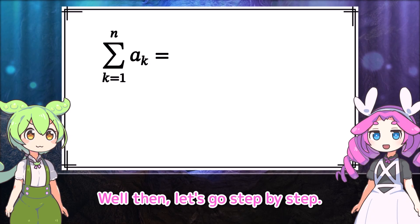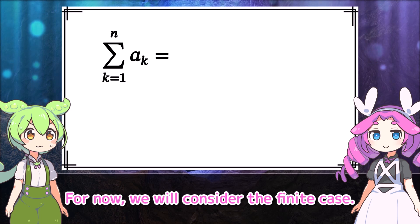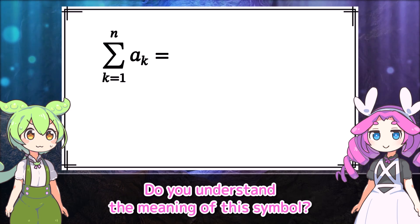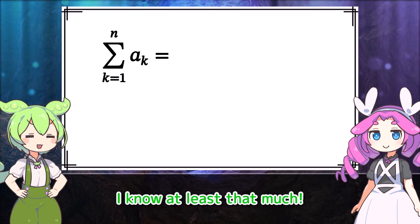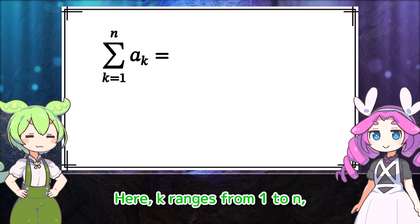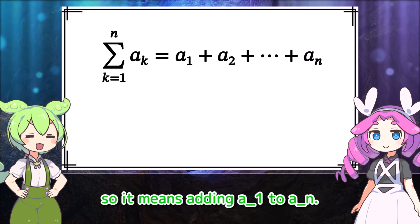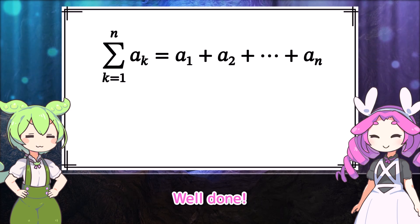Well then, let's go step by step. For now, we will consider the finite case. Do you understand the meaning of this symbol? Let's assume each a_k is a real number. k ranges from 1 to n, so it means adding a_1 to a_n.